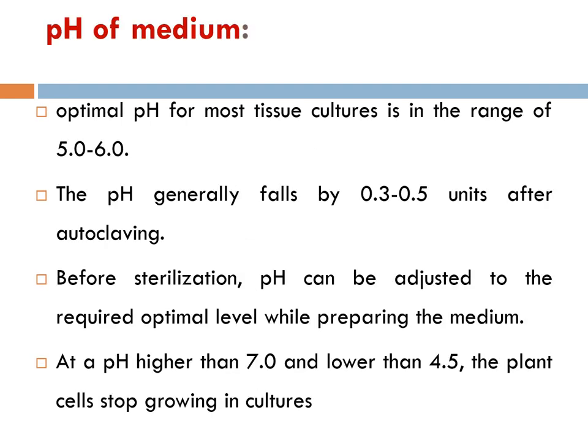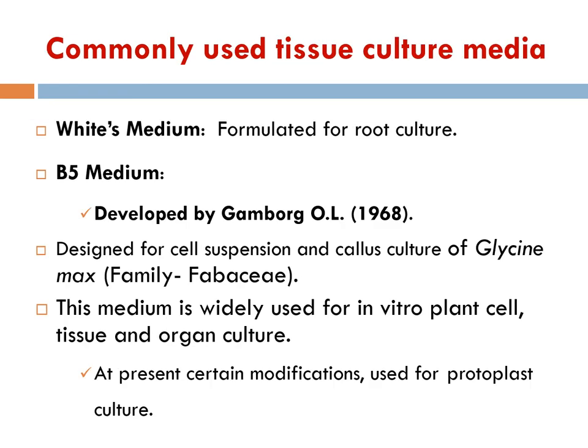The pH of the medium is very important and plays a critical role in any culture medium. The optimal pH for most media is in the range of 5 to 6. The pH generally falls by 0.3 to 0.5 units after autoclaving. Before sterilization, pH can be adjusted to the required optimal level while preparing the medium. pH below 5 will not allow agar to gel properly, and above pH 6 the medium will be too hard.